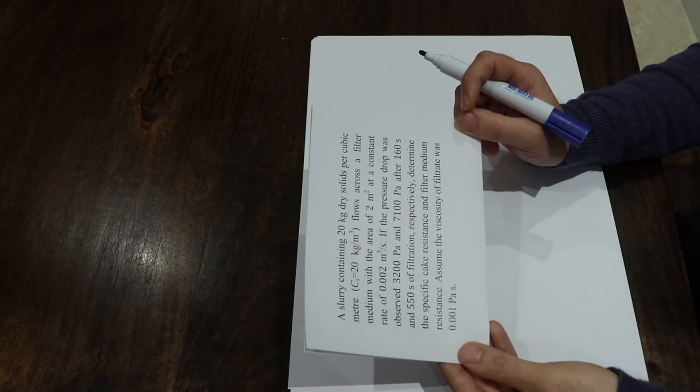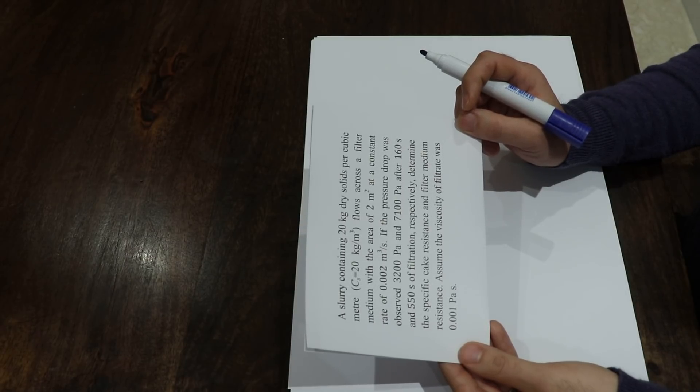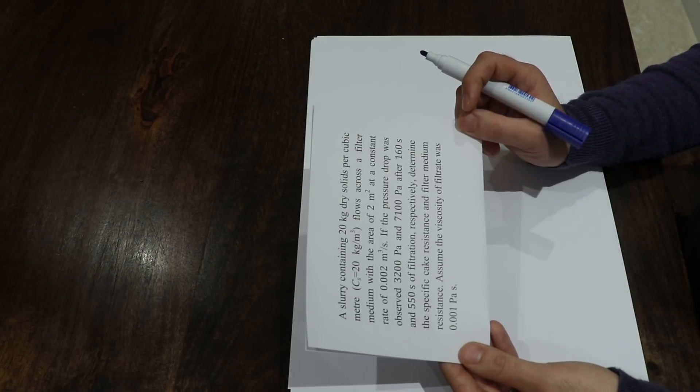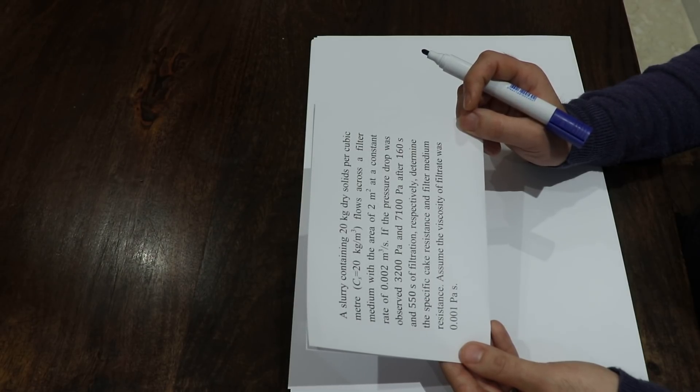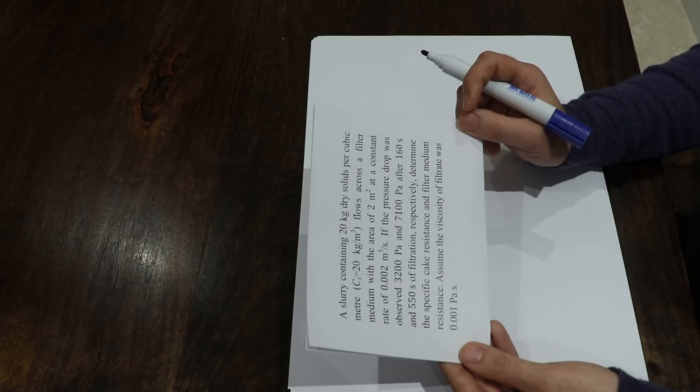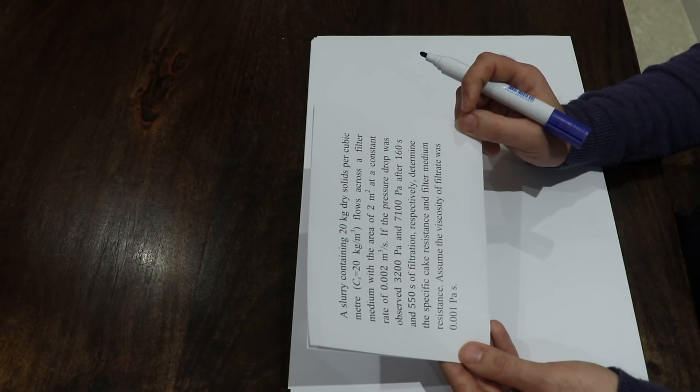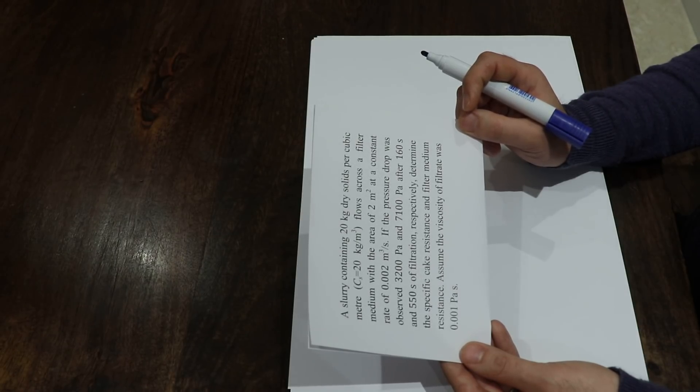2 square meters at a constant rate of 2 times 10 to the minus 3 cubic meters per second. If the pressure drop was observed at 3200 Pascal and 7100 Pascal after 160 and 550 seconds of filtration respectively, determine the specific cake resistance and filter medium resistance. Assume the viscosity of filtrate was 10 to the minus 3 Pascal second.